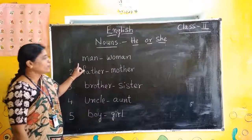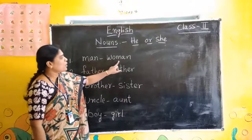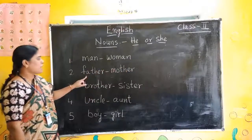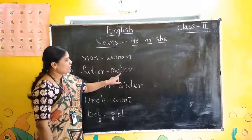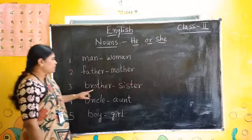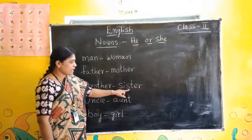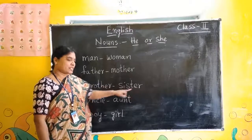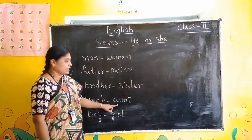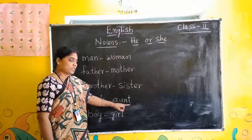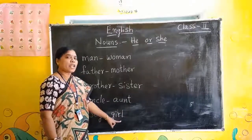Okay children, you learn with spellings. Uncle: U-N-C-L-E, Uncle. Aunt: A-U-N-T, Aunt. Boy: B-O-Y, Boy. G-I-R-L, Girl.